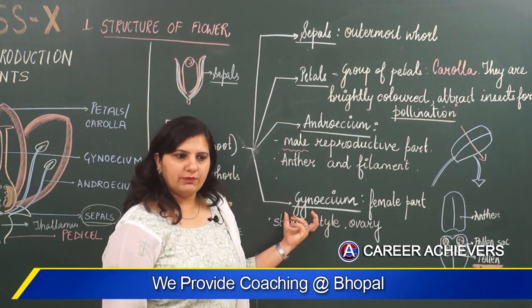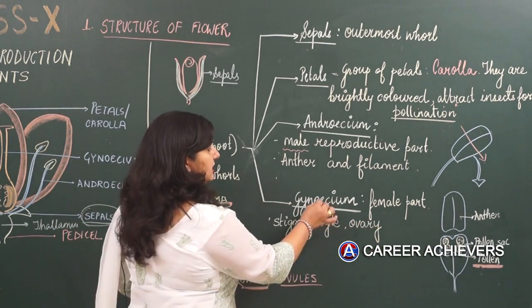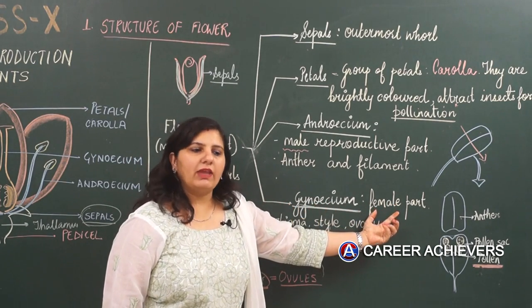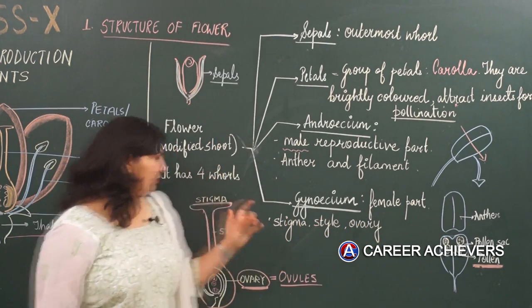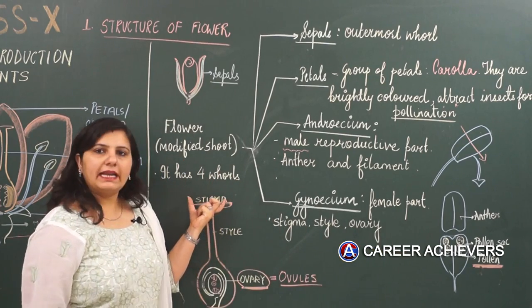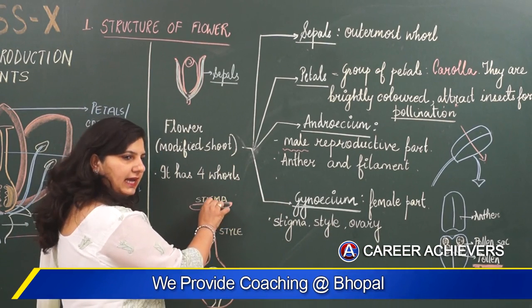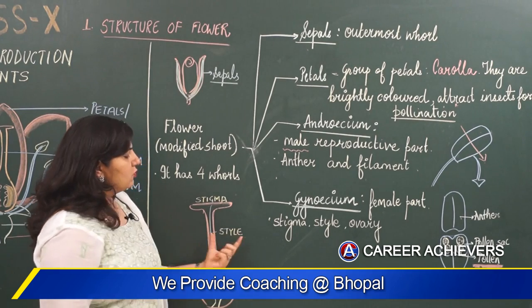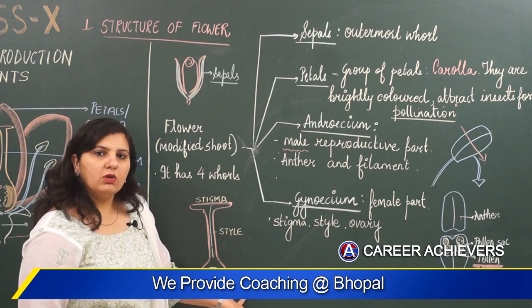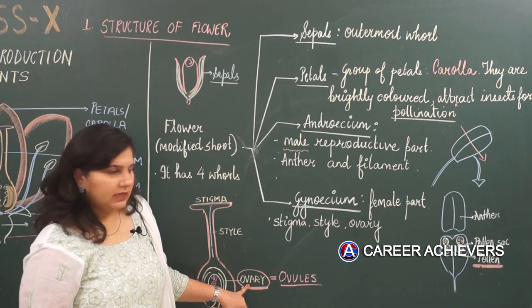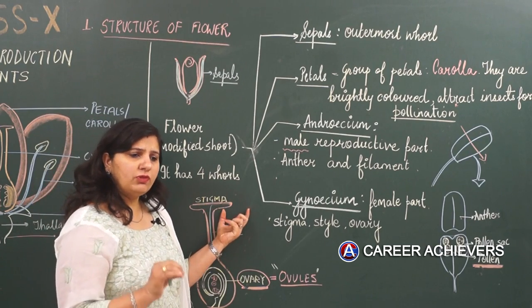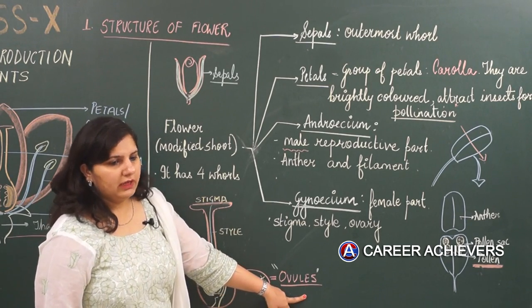The gynoecium is the female part of any flower — wherever we see the prefix 'gyno' or 'gynec,' it refers to the female part. The gynoecium comprises the stigma, style, and ovary. The stigma is the receptacle part where the pollen grain comes and attaches. Once attached, the pollen grain moves down in the form of a tube through the style and into the ovary. The ovary is the female reproductive part which carries ovules — the female gametes — which fuse with the male gamete during sexual reproduction to form a zygote.